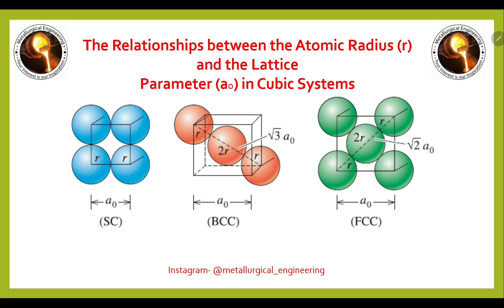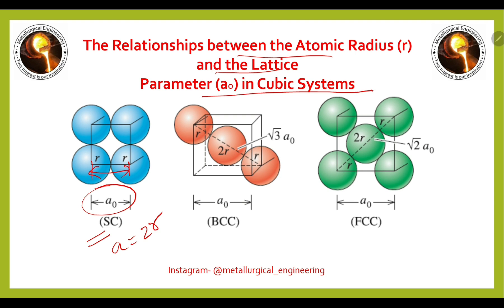We will see the relationships between the atomic radius and the lattice parameter in cubic systems. For simple cubic, A₀ is the distance between two atomic centers. The relation is A = 2R. The only example for simple cubic is polonium.